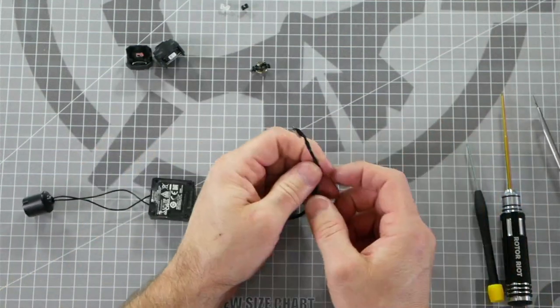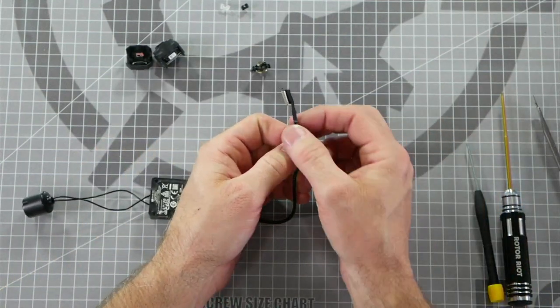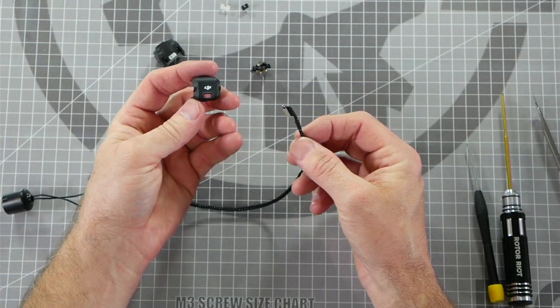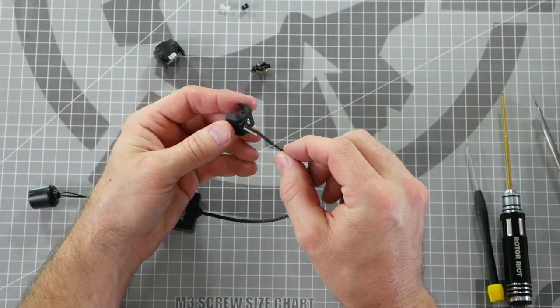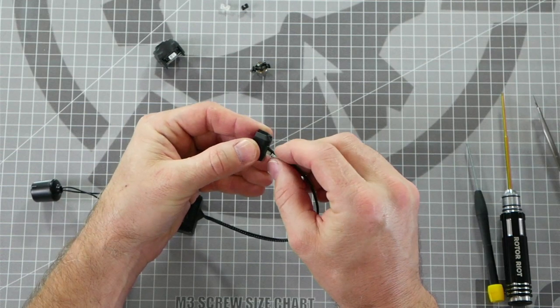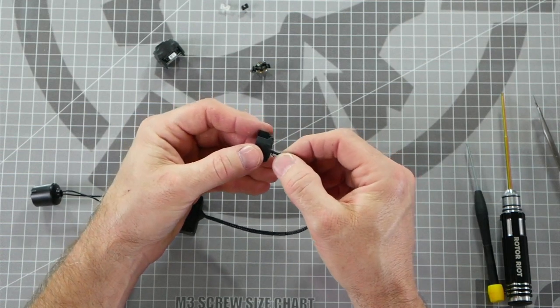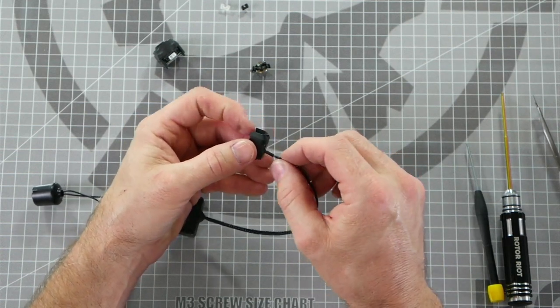Next we'll reinstall the camera side of the camera cable to the camera itself. We'll start by threading it through the rectangular shaped hole that we pulled it out of earlier. Line it up with the rectangular shaped hole and slide it through. Be very careful not to damage the cable as you slide it through. Squeeze it if you need to to make it fit through better.